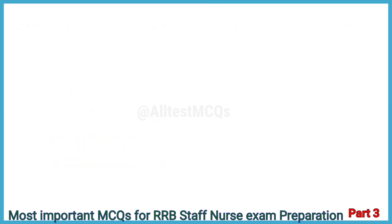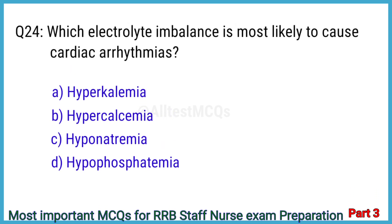Question No. 24. Which electrolyte imbalance is most likely to cause cardiac arrhythmias? The right answer is Option A: Hyperkalemia.